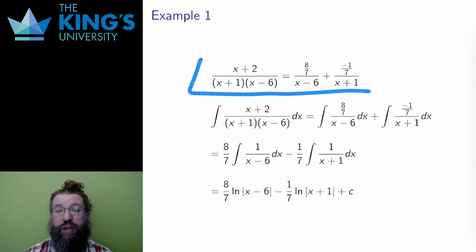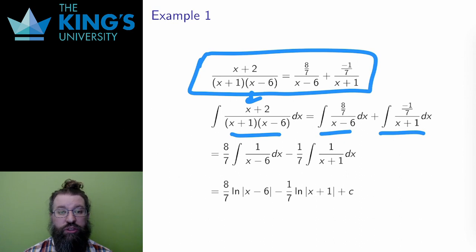I calculated this partial fraction decomposition in video 3 for this week. Therefore, if I want to integrate this rational function, I can break up the integral into two pieces, one for each of the smaller fractions. I can pull out the constants.